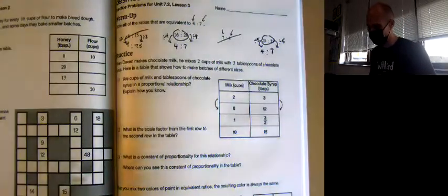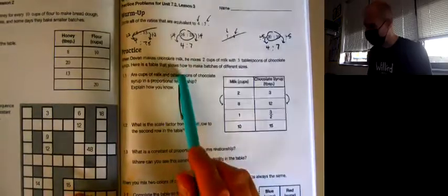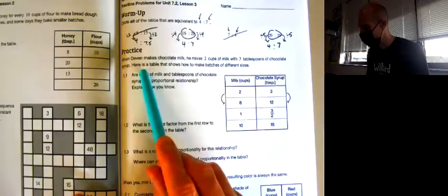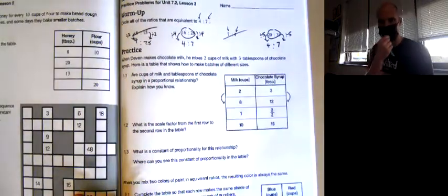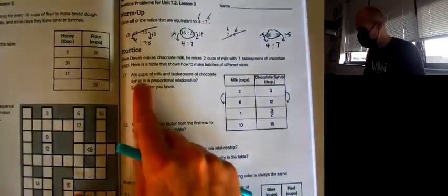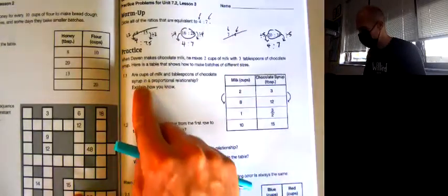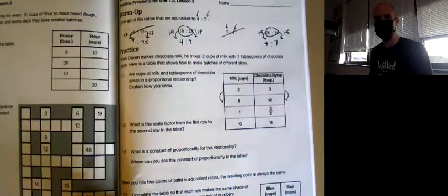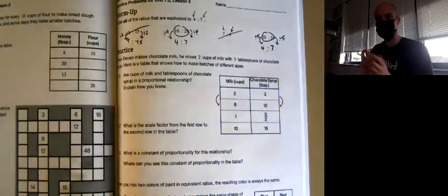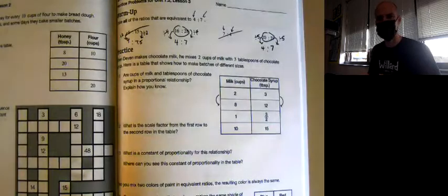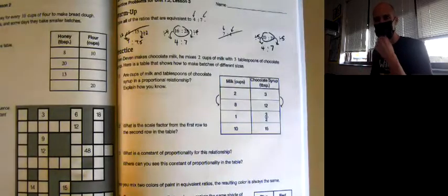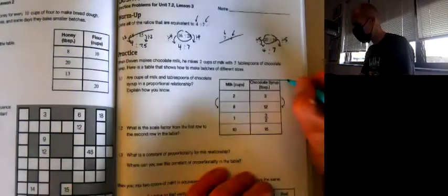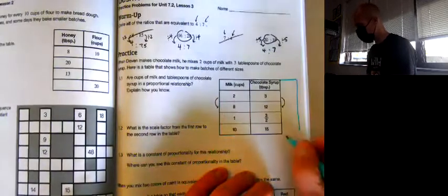The next part says when Devin makes chocolate milk, he mixes 2 cups of milk with 3 tablespoons of chocolate syrup. Here's a table that shows how to make batches of different sizes. Are cups of milk and tablespoons of chocolate syrup in a proportional relationship? Explain how you know. We would expect them to be in a proportional relationship. You wouldn't normally change a recipe so that the ratio between ingredients changes based on the batch sizes.